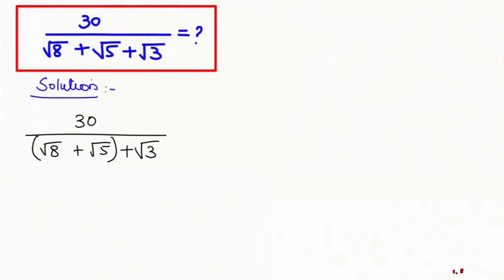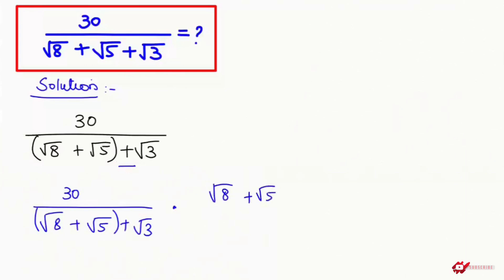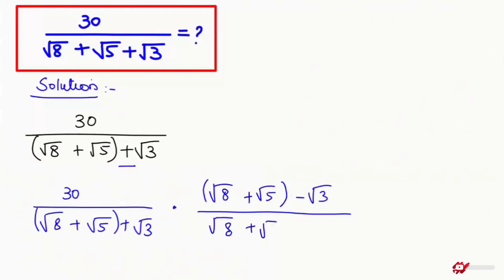Now in the next step, I am going to rationalize the denominator. For rationalizing the denominator, I am going to multiply and divide by changing the sign: 30 over (root 8 plus root 5 plus root 3) times (root 8 plus root 5 minus root 3) over (root 8 plus root 5 minus root 3).